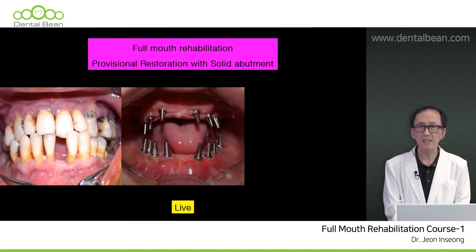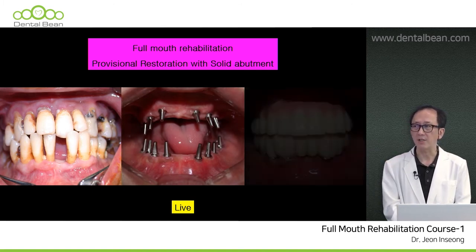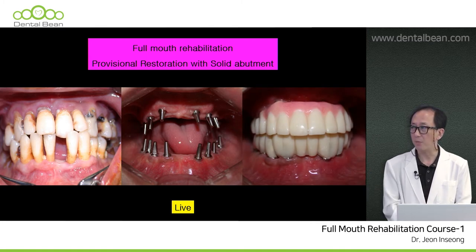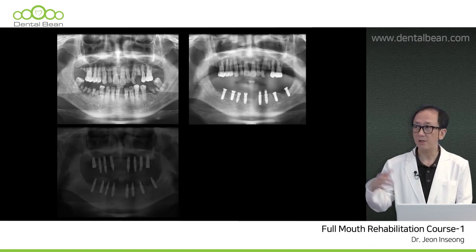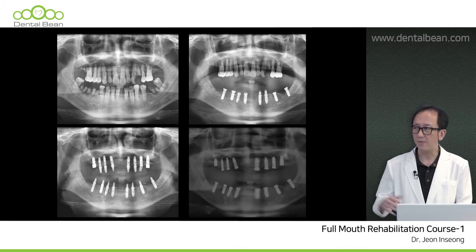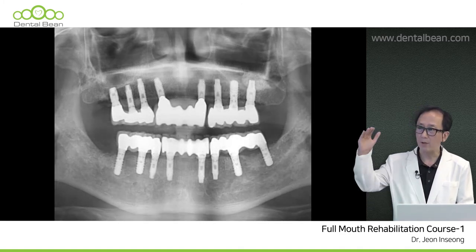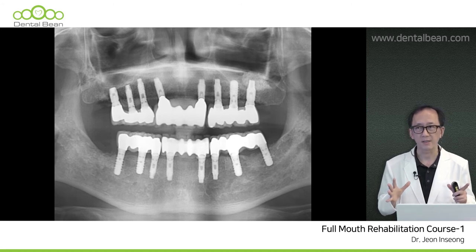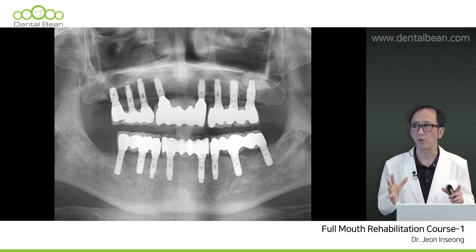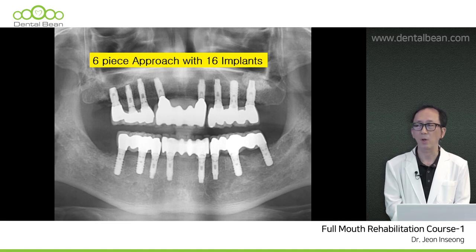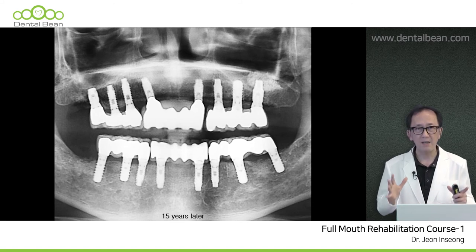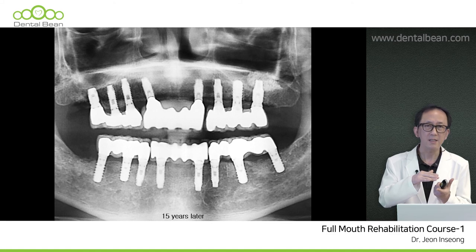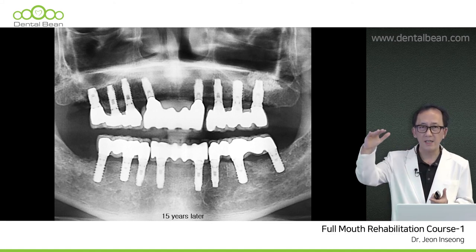Full mouth rehabilitation requires several implants and multiple surgical treatment modalities. I finished the surgery, placing upper eight and lower eight implants. At six weeks I performed temporization with provisional restorations. This shows before surgery, during surgery, the provisional restoration, and the final prosthesis. Finally, upper eight and lower eight — totally six-piece segments — with 16 implants total. This is the 15-years-later result. Full mouth rehabilitation is highly predictable, progressing from surgery through temporization and provisional restoration to the final prosthesis.